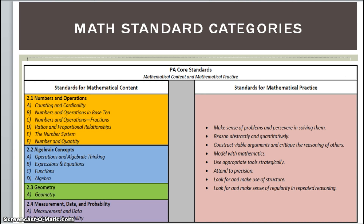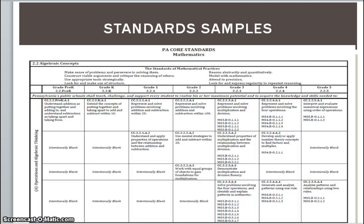Our grade 6 through 12 standards, knowing that students have built a strong foundation at K-5, include hands-on learning in geometry, algebra, probability, and statistics. Students who have mastered the content and skills through 6th and 7th grade will be better prepared for algebra when they reach it. I want to show you some standard samples to demystify what the standards actually look like. This example is in algebraic concepts — specifically operations and algebraic thinking — and you can see how it progresses from pre-K all the way up to 5th grade.